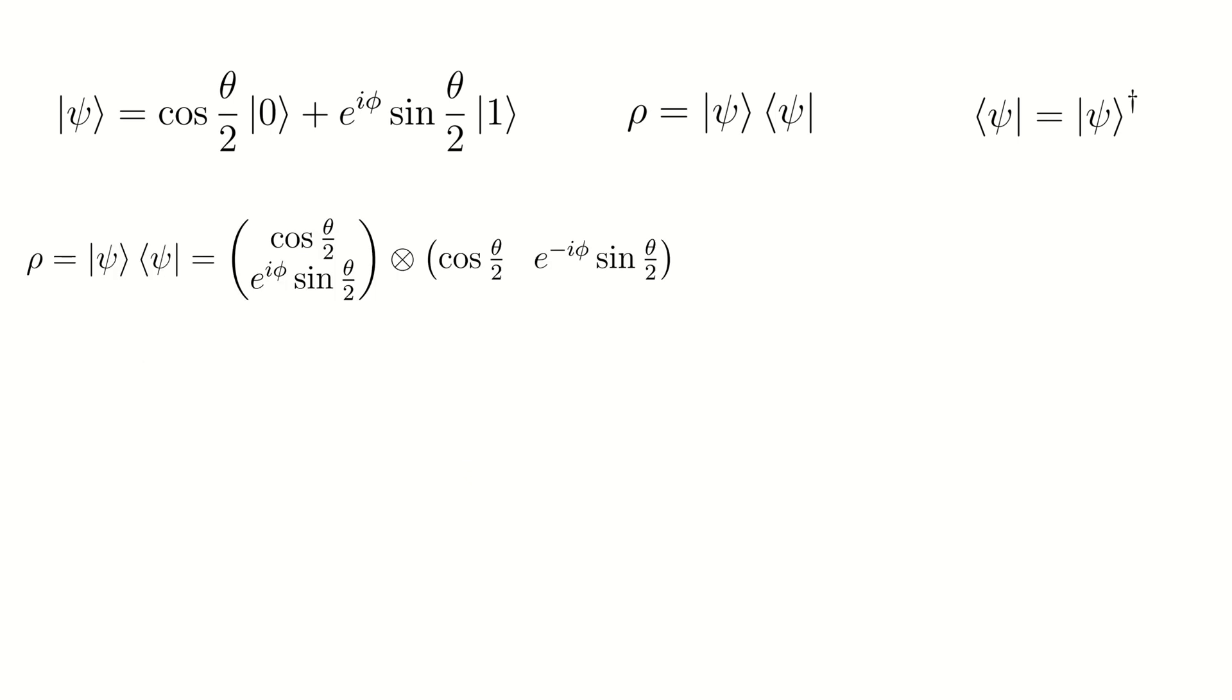Let us substitute the expression for the ket-psi into the formula for the density operator. First, we apply the standard matrix multiplication rules and multiply a row by a column.